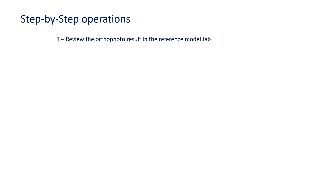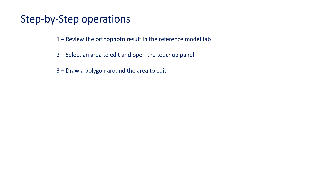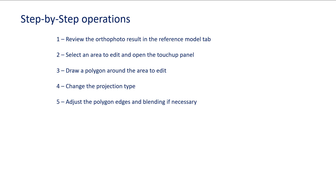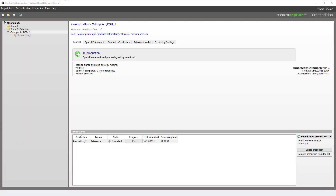First, we will review the Autophoto result in the reference model tab. Then select an area to edit and open the touch-up panel. Then draw a polygon around the area to edit. Change the projection type. Adjust the polygon edges and blending if necessary. And apply your modifications.